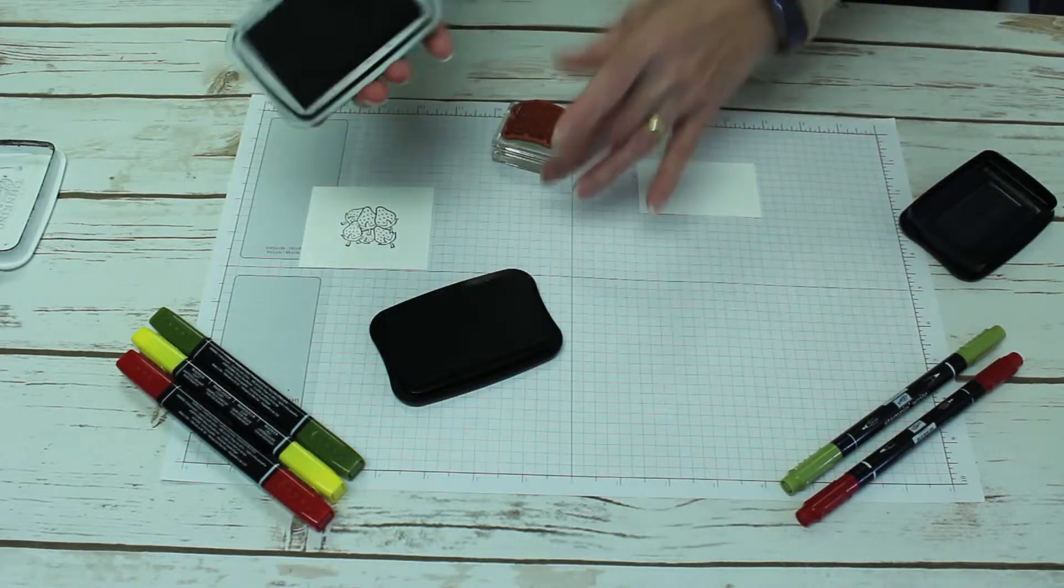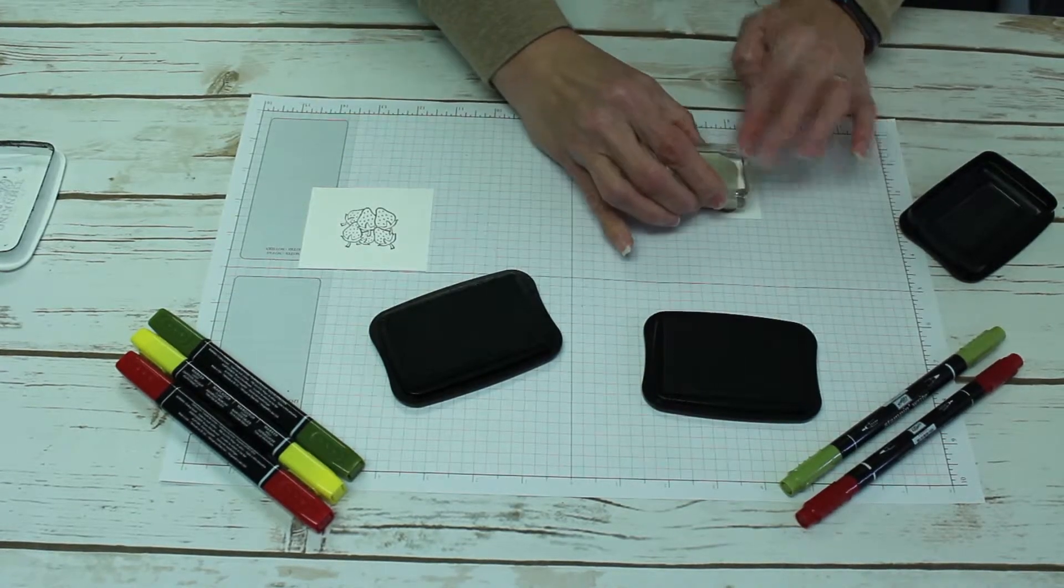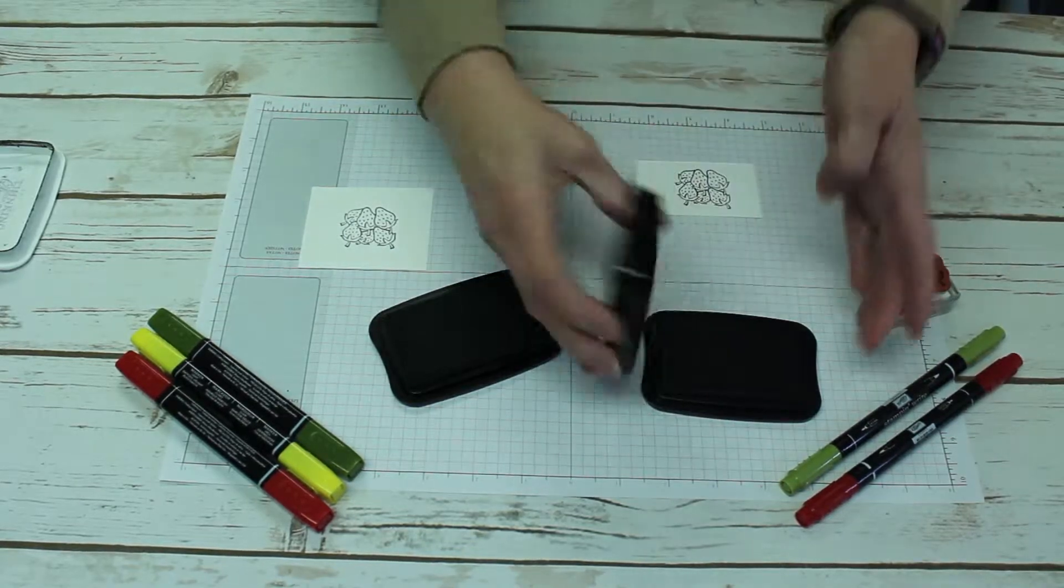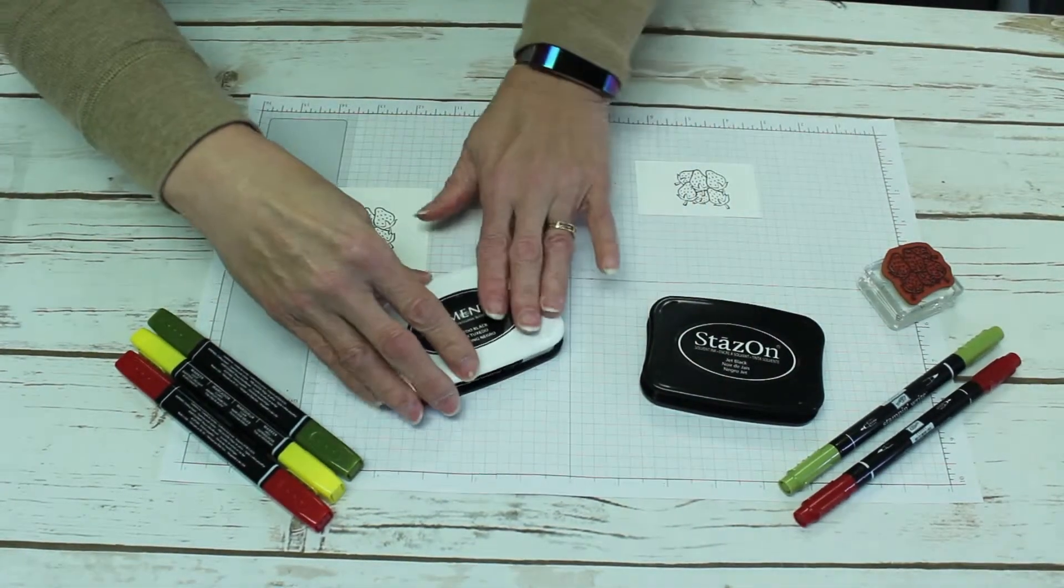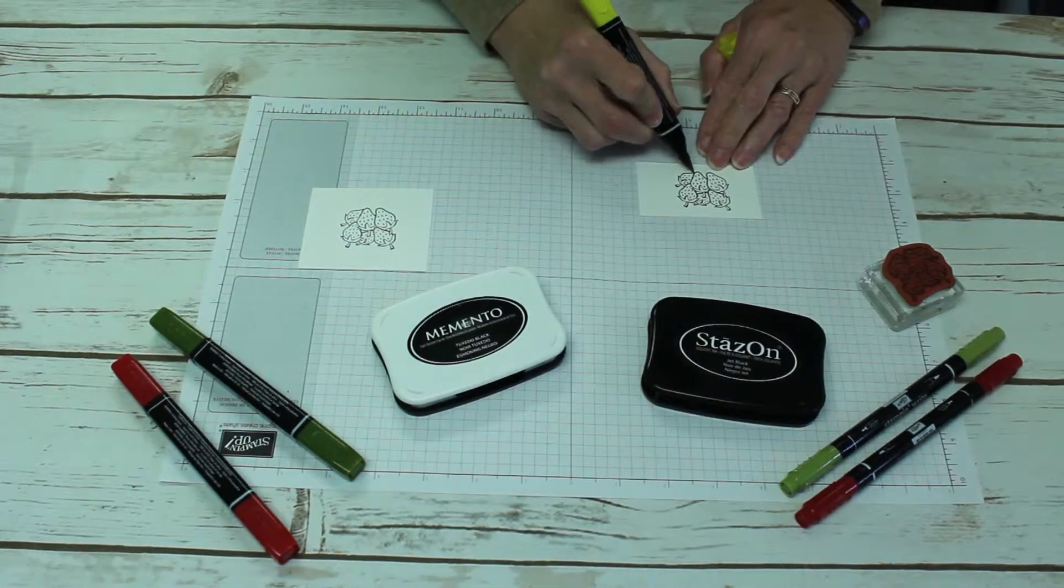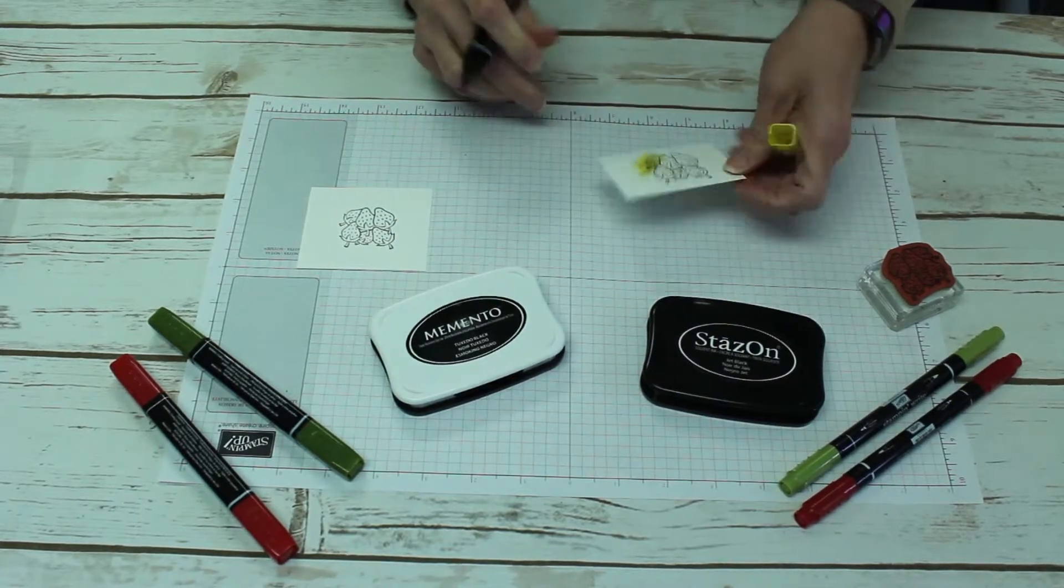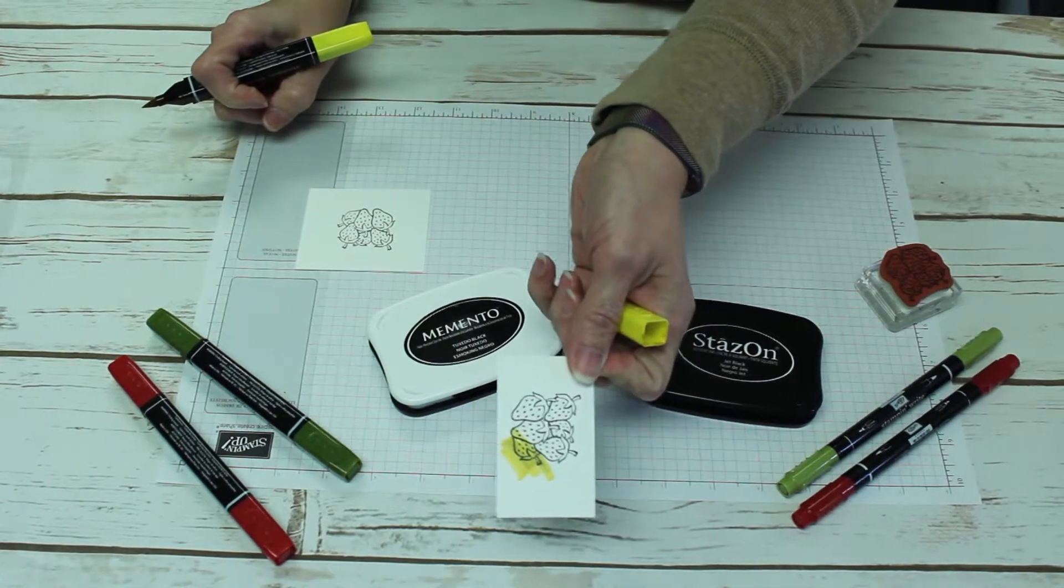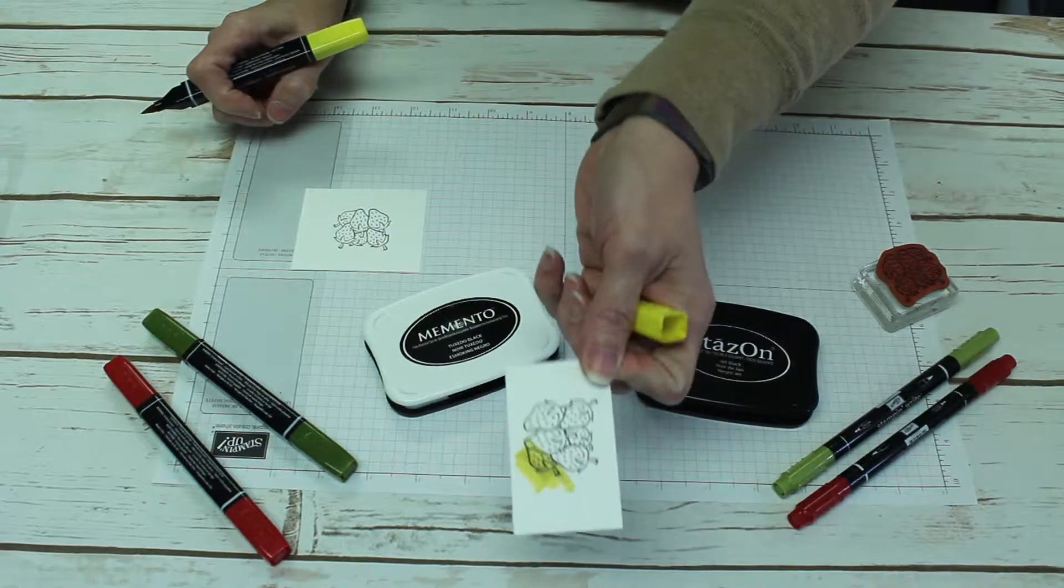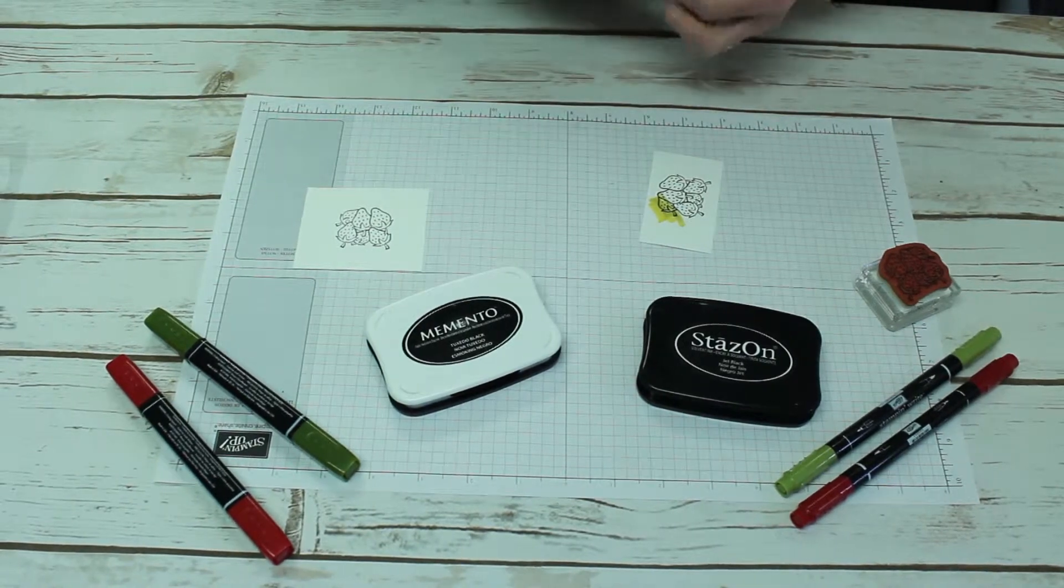Now, what I'm going to do first is show you what would happen if I try to use one of my alcohol markers on this. You see what's happening? When you run the alcohol marker over the StazOn solvent ink, it smears. Not only will it ruin your card, but it will ruin your marker because you will get the black ink all over your marker.